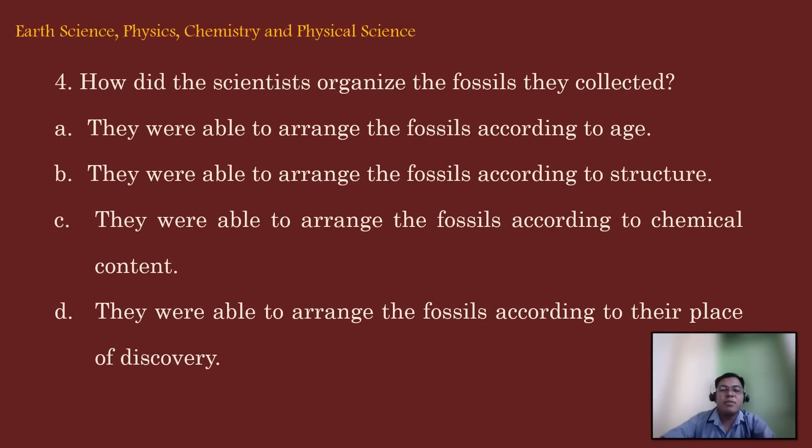Let's move on to item number 4. How did the scientists organize the fossils they collected? A. They were able to arrange the fossils according to age. B. They were able to arrange the fossils according to structure. C. They were able to arrange the fossils according to chemical content. D. They were able to arrange the fossils according to their place of discovery.